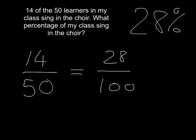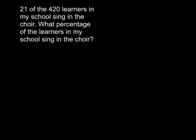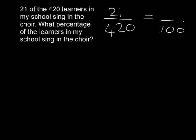But there are going to be many examples where we can't easily see what it is over 100. If I'm told that 21 of the 420 learners in the school sing in the choir and I want to know what percentage that is, I know that 21 out of 420 is the fraction in the choir, and I want to turn that into a percentage. It's not simple to see what to do to 420 to turn it into 100, so we need a different method.